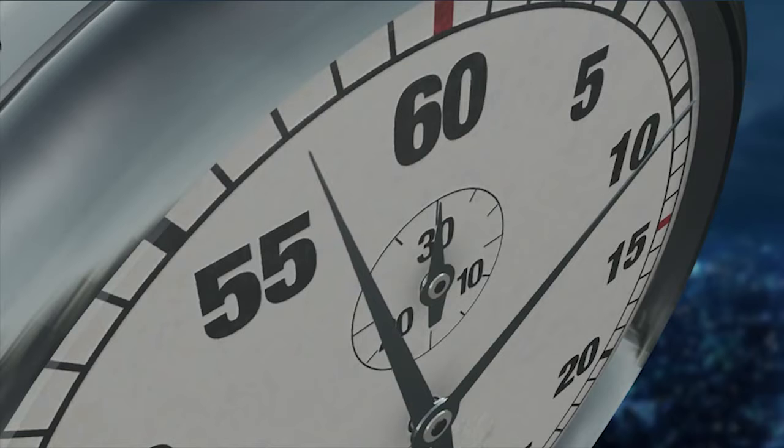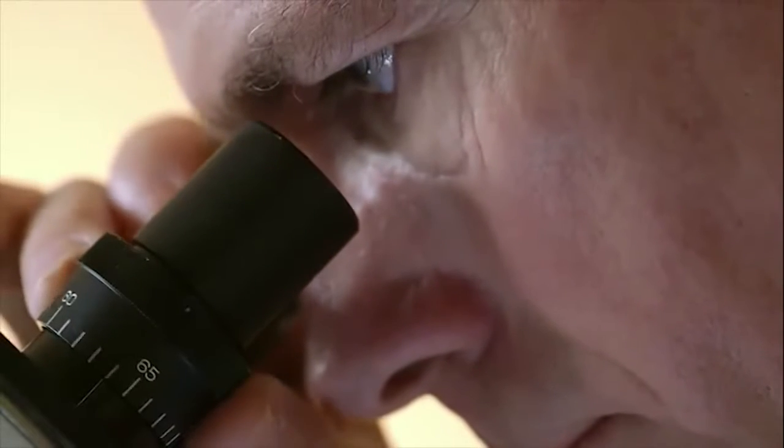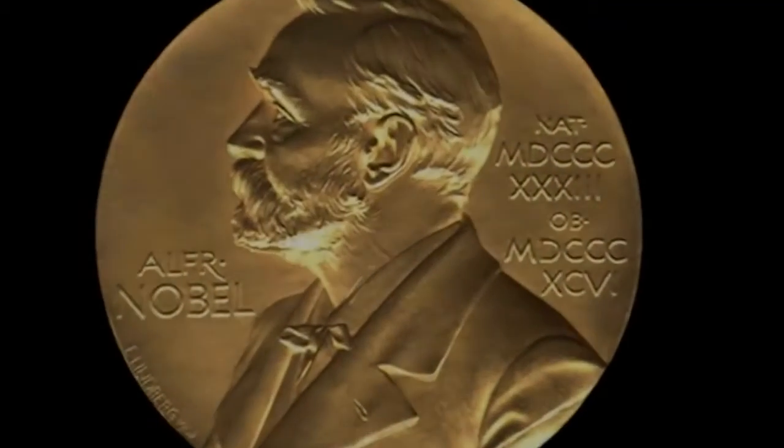But what if we could slow cellular aging? An amazing breakthrough in genetic coding may finally make it possible to do just that. In 2009, a team of doctors won the Nobel Prize in Physiology for discovering that the ends of chromosomes are protected by coverings called telomeres that control cellular aging.